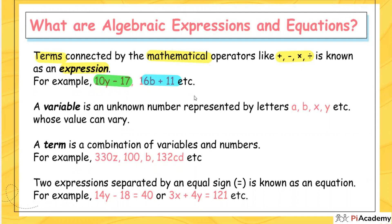A variable is an unknown number represented by letters — you can use small alphabets like a, b, x, y. Variable means unknown, and its value can be anything; it varies from question to question. The next important word is 'term.' A term is a combination of variables and numbers.